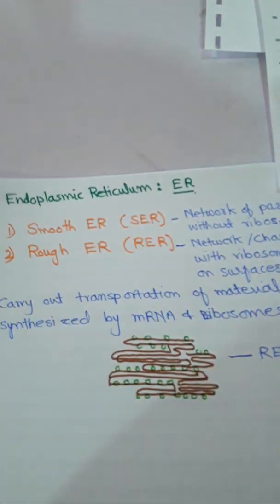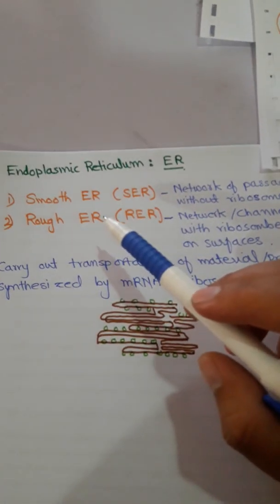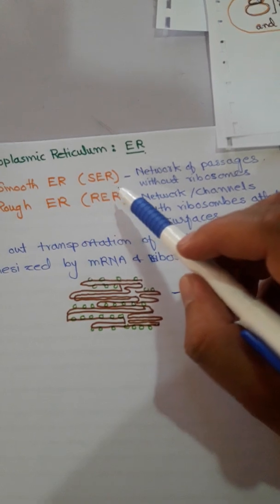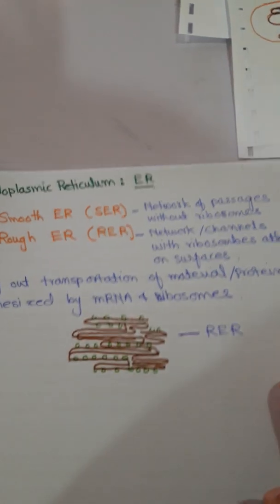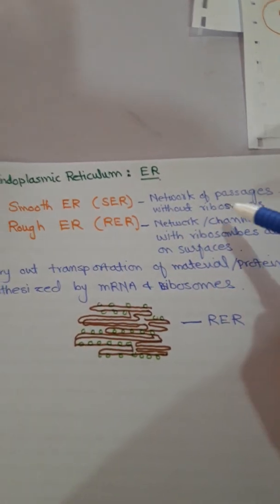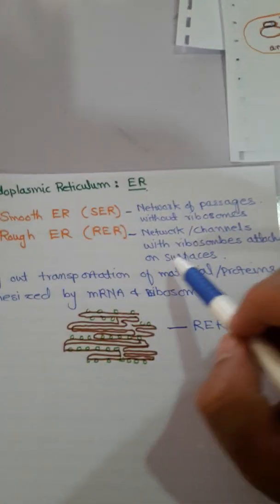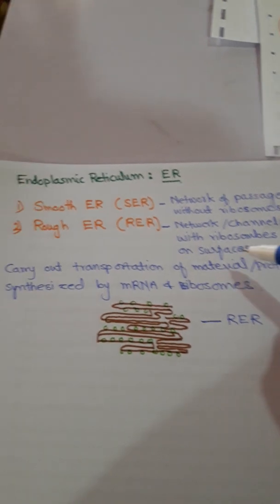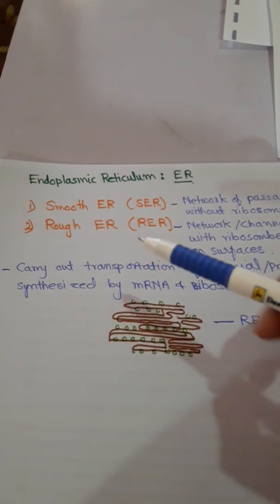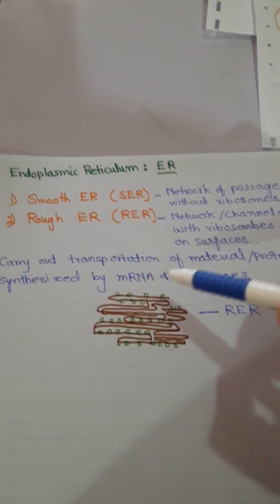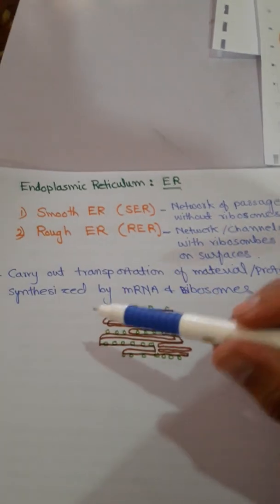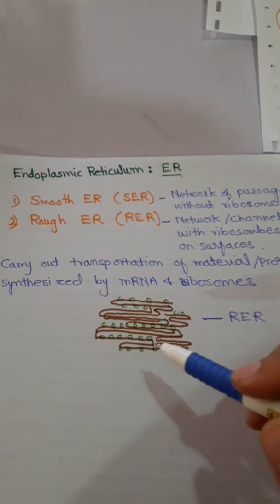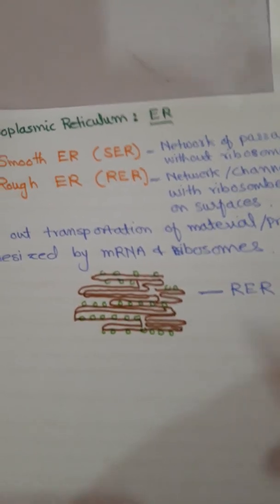There are two types of endoplasmic reticulum: smooth endoplasmic reticulum, which is a network of passages without ribosomes, and rough endoplasmic reticulum, which is a network of channels with ribosomes attached on the surfaces. The endoplasmic reticulum carries out transportation of materials like proteins synthesized by mRNA and ribosomes.